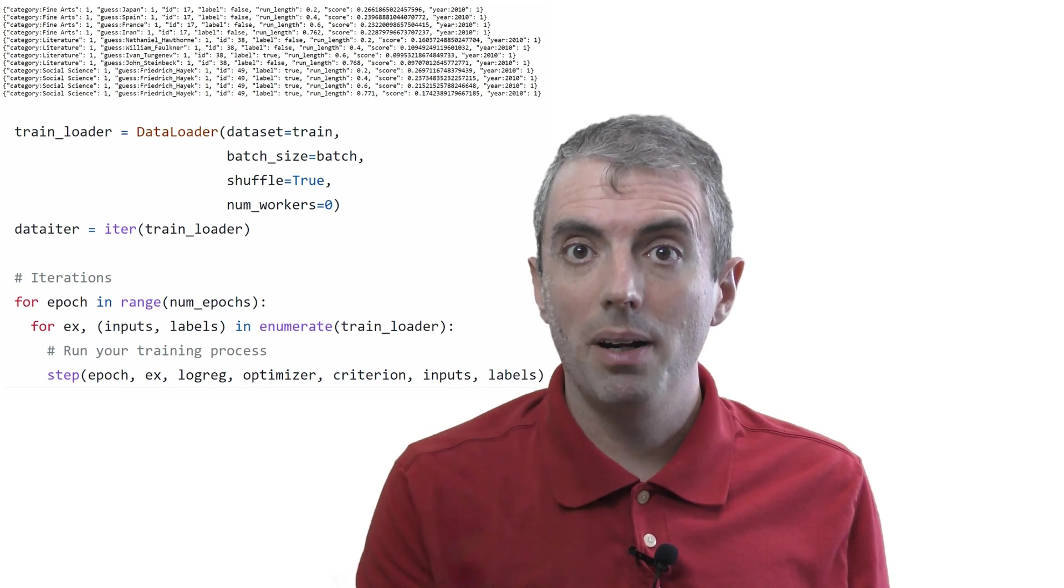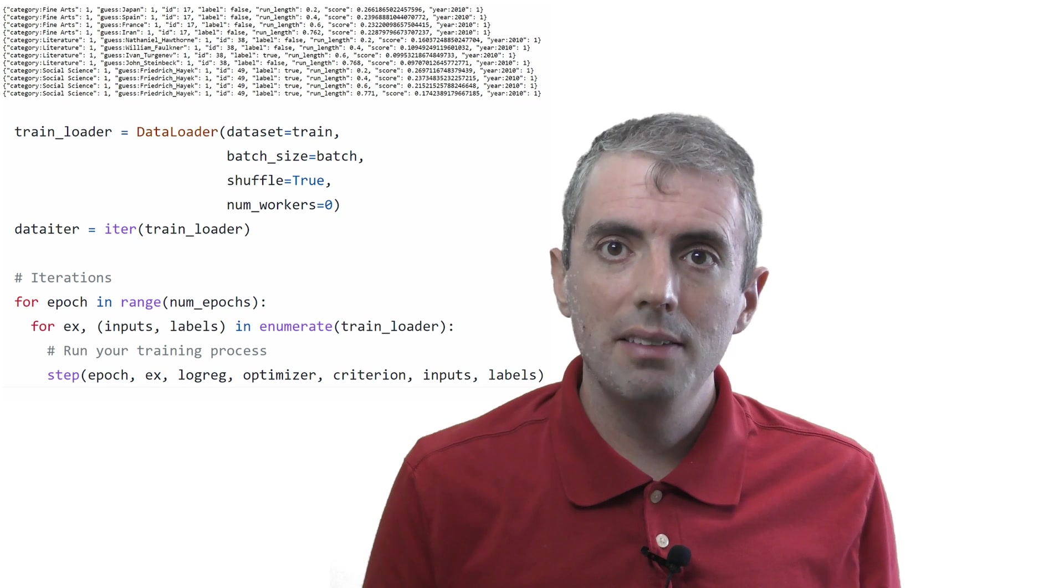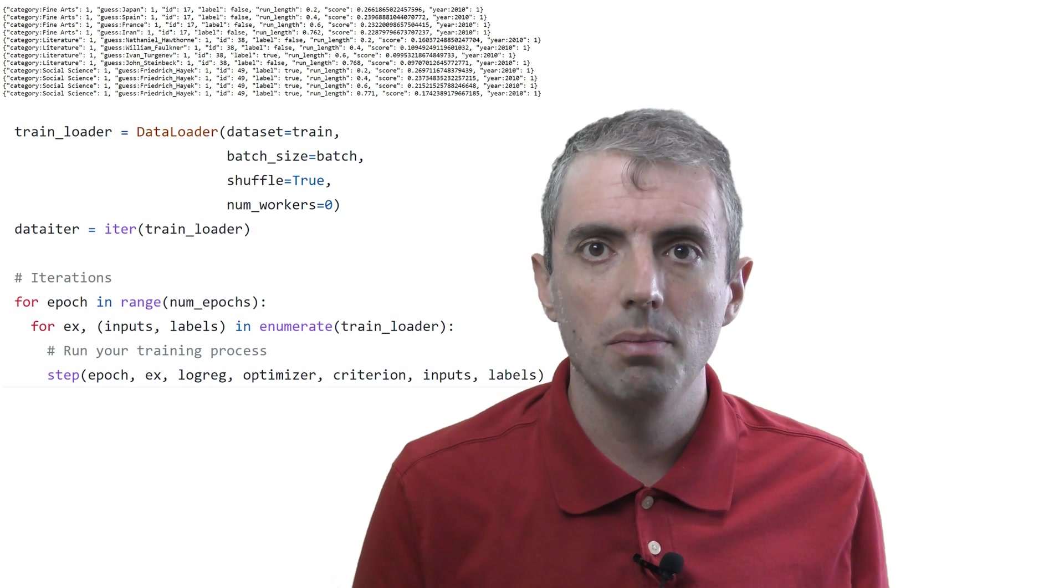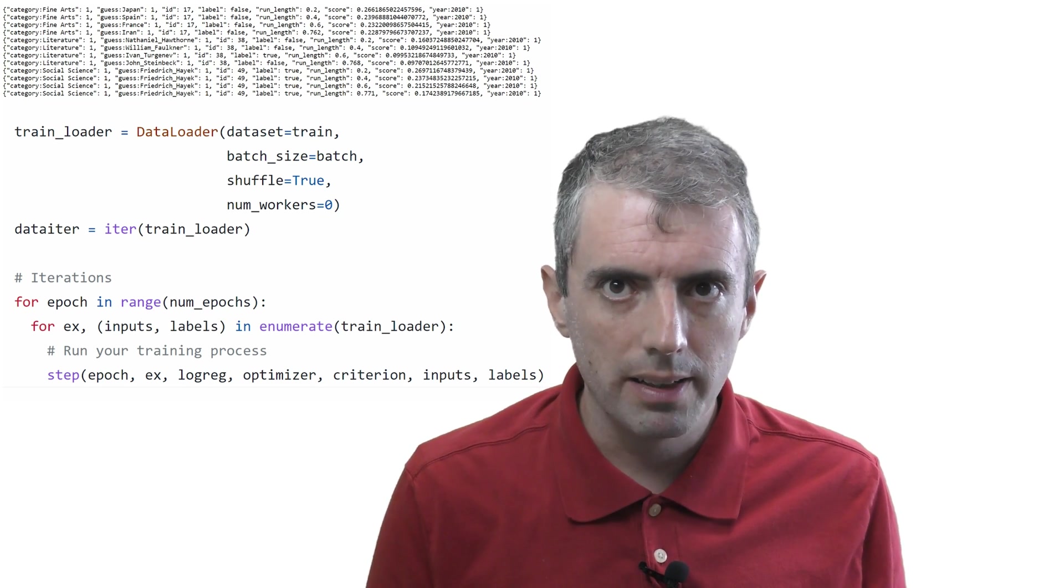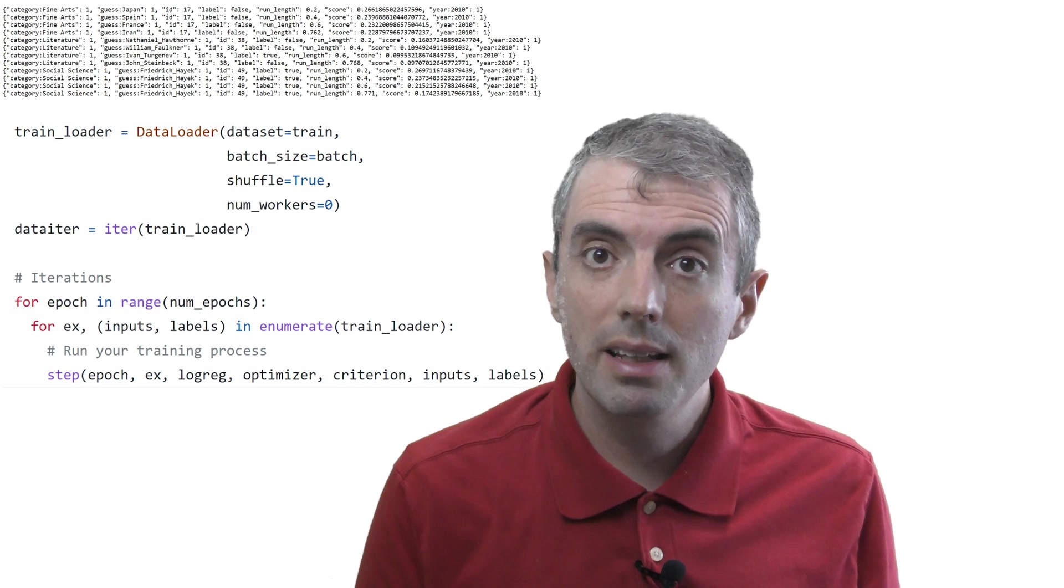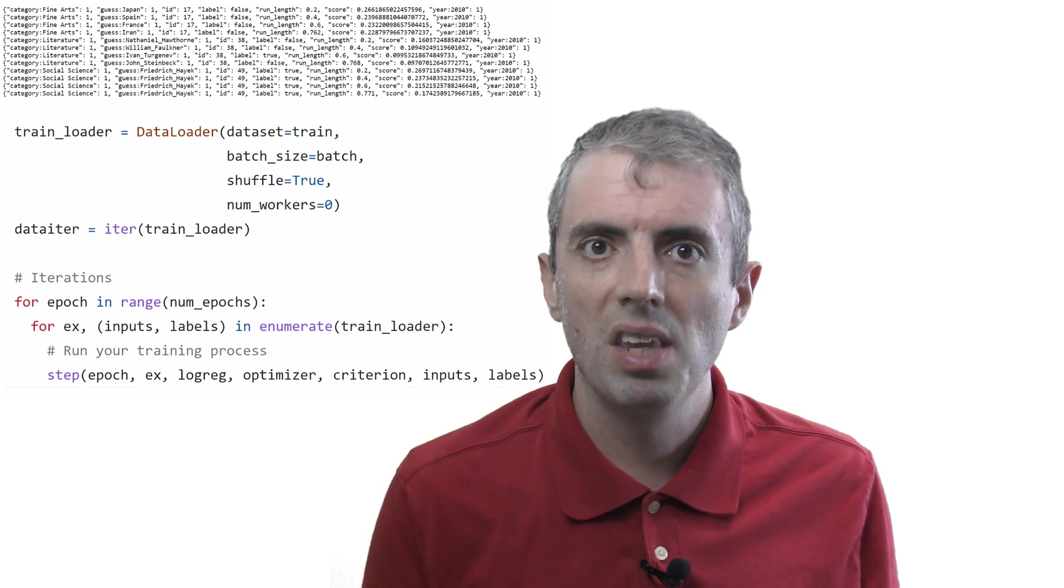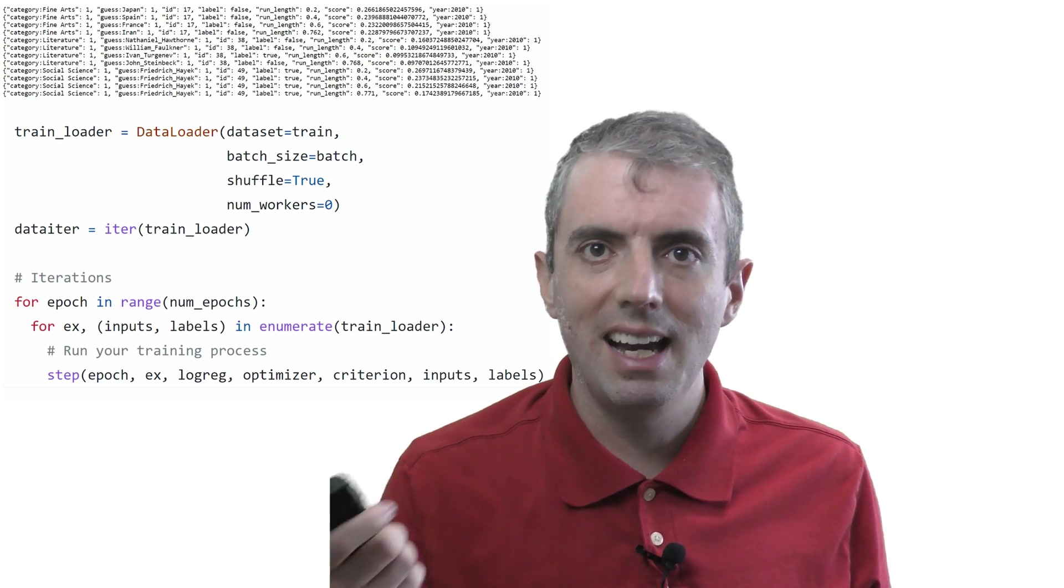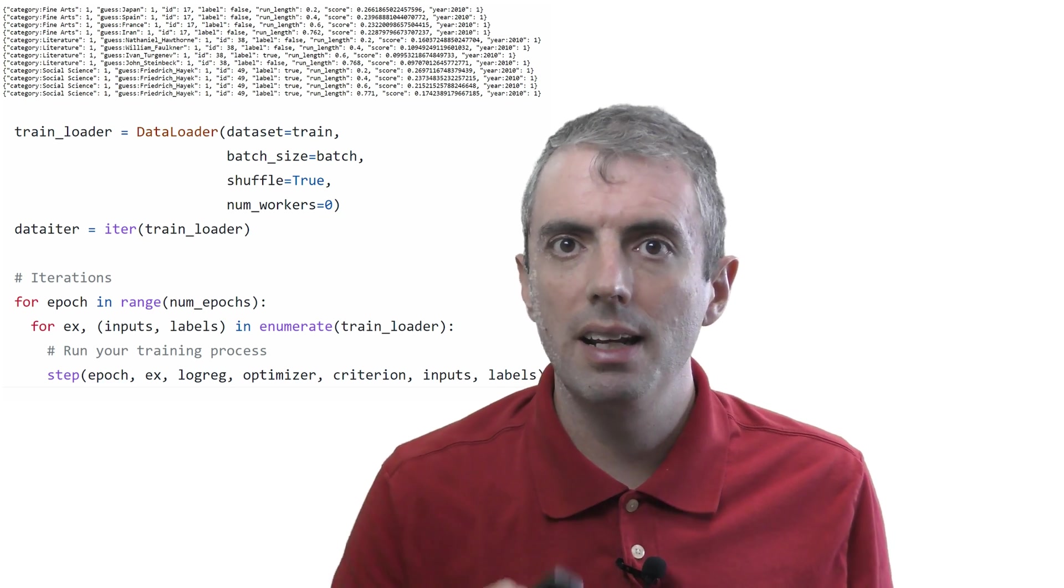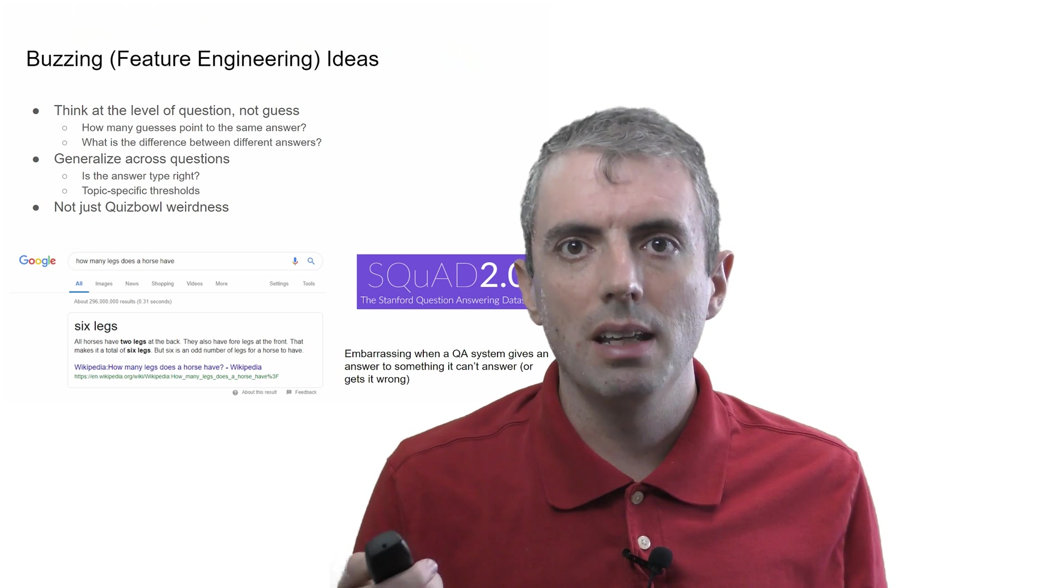And here's the code that will take those guesses and use it as training data. This is probably the part of the task that requires the most creativity. One high-level piece of advice is not to think about individual guesses. How likely is the answer to this question midnight's children? That's not the right way to think about it. The way to think about it is, if I have three guesses of midnight's children and one guess of Salman Rushdie, how likely is it that I think the answer is midnight's children? In other words, use the constellation of guesses to figure out what to answer. This is why it's good to get more than the top one guess out of the guesser.